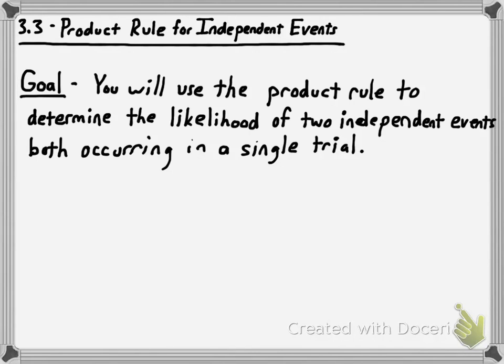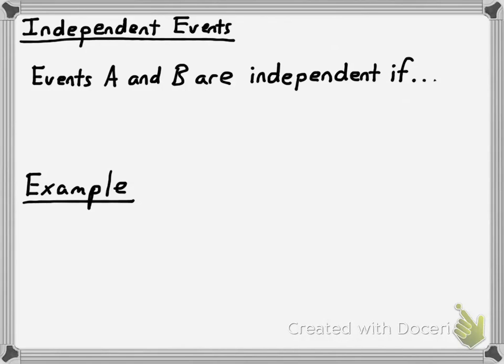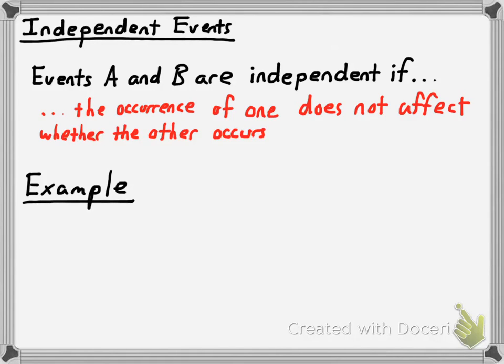To use the product rule to determine the likelihood of two independent events both occurring in a single trial, we have to do some definitions first. We have to know what independent events are, and the big thing to emphasize is that independent and mutually exclusive mean different things. Here's the definition: events A and B are independent if the occurrence of one does not affect whether the other event occurs.